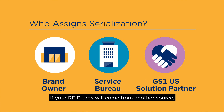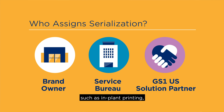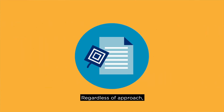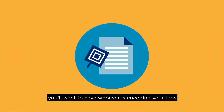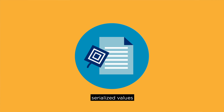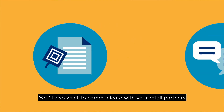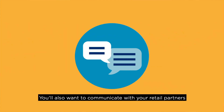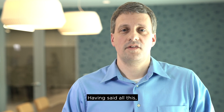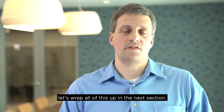If your RFID tags will come from another source, such as in-plant printing, then you'll likely be using a GS1 US solution partner to enable this. Regardless of approach, you'll want to have whoever is encoding your tags document their scheme and make sure you understand how they will ensure unique serialized values for each product. You'll also want to communicate with your retail partners to see if they need you to reserve a range of serial numbers for their use, such as for in-store item tagging. Let's wrap all of this up in the next section.